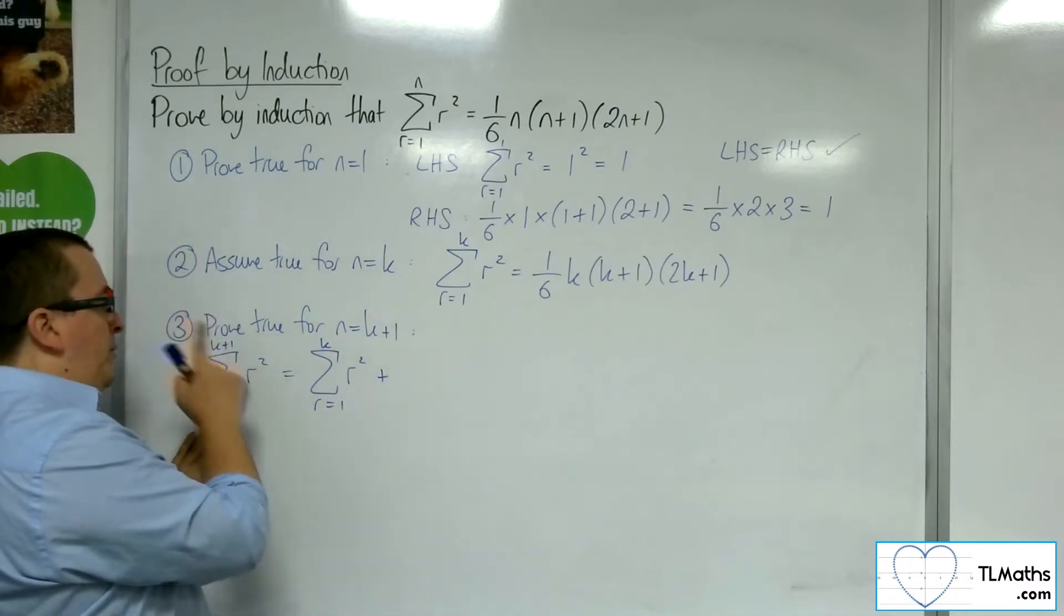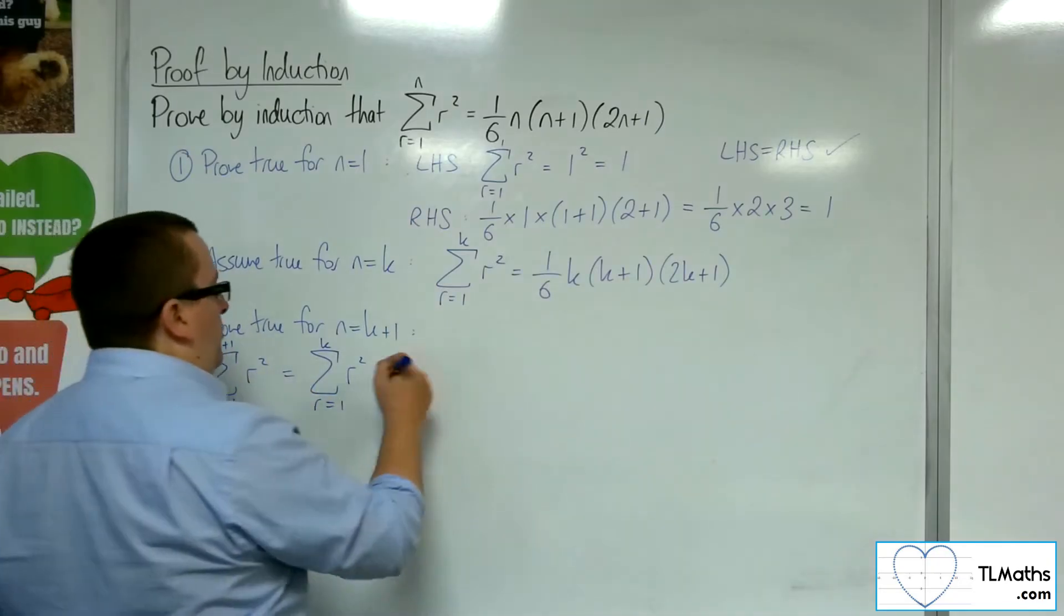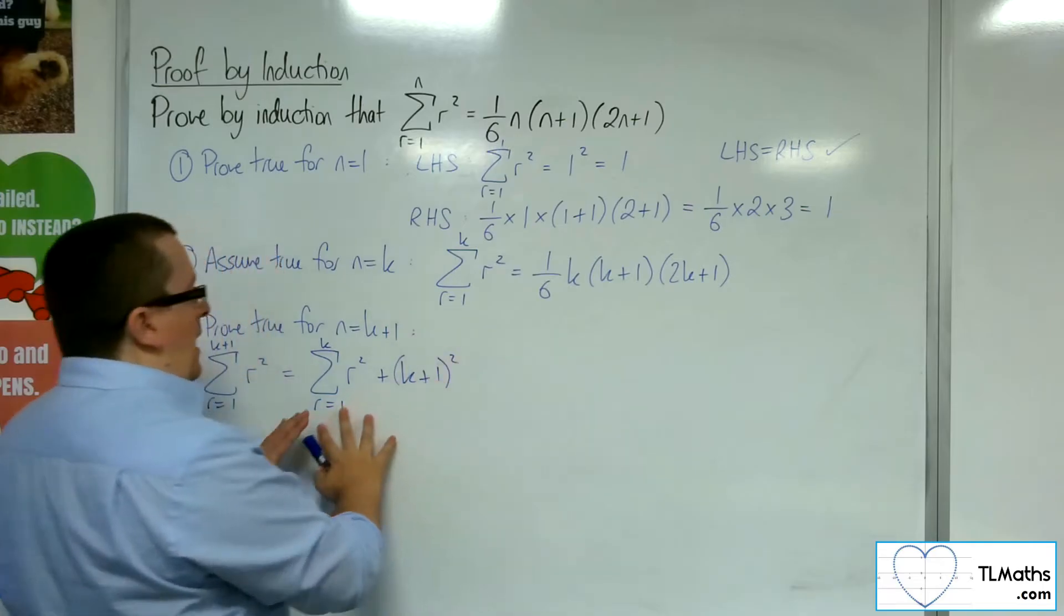This goes from r is 1 up to k. And then there's also another term, the k plus 1 term. So, we substitute the k plus 1 into the r squared. So, k plus 1 squared.